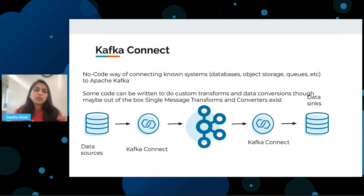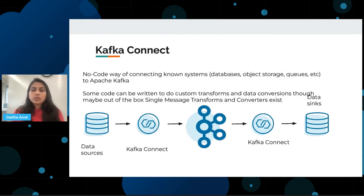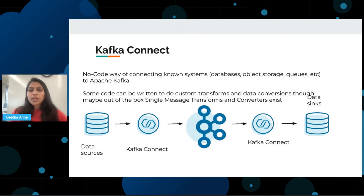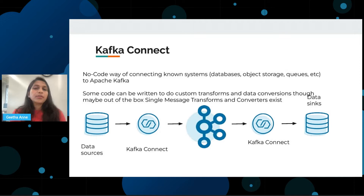That's the overall concept of producers, consumers, and brokers at a high-level overview. One more thing to cover is Kafka Connect, which is a no-code way of connecting your sources and destinations with a reliable means of transforming and moving data. You can customize it by writing custom transformations, aggregations, or simple message conversions. If you want data to conform to a certain format like JSON, Protobuf, or Avro, you can do that with Kafka Connect. It's simply a way to move data on the fly while performing transformations.